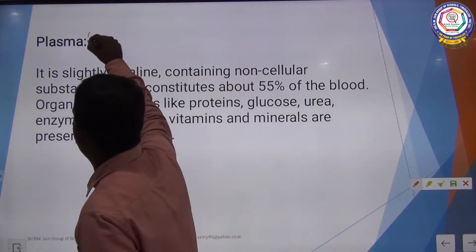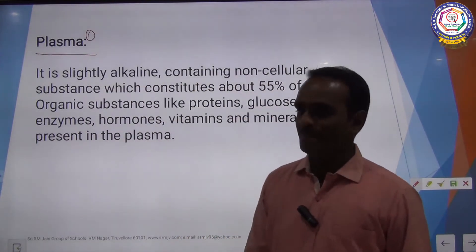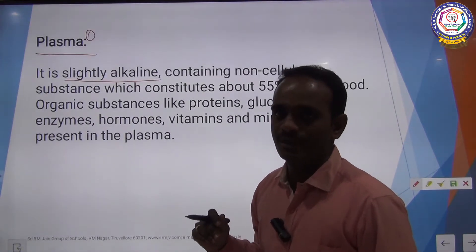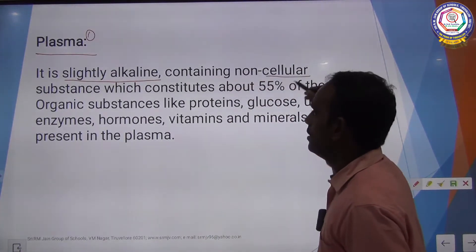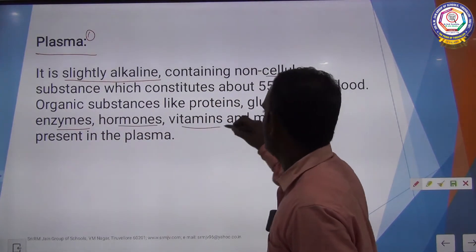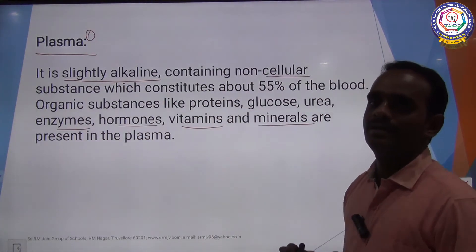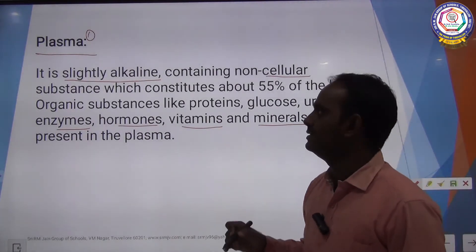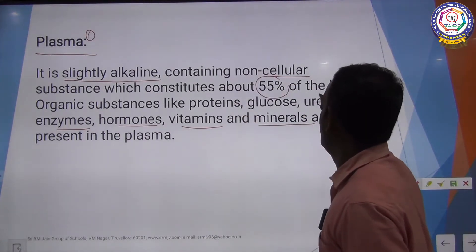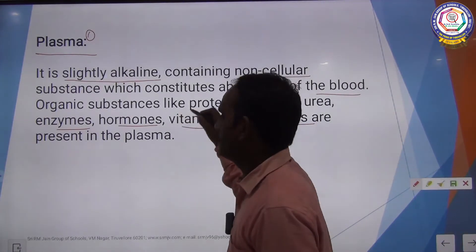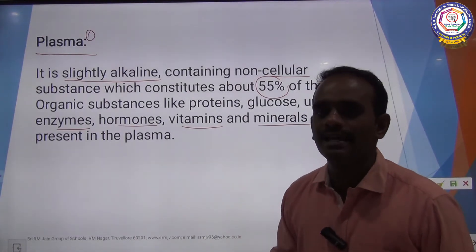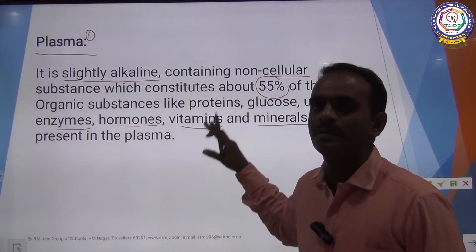The first component of blood is Plasma. Plasma is slightly alkaline and it contains non-cellular substances, hormones, enzymes, vitamins and minerals. The organic substances present in plasma include protein, glucose, carbohydrate, urea, enzymes and hormones.